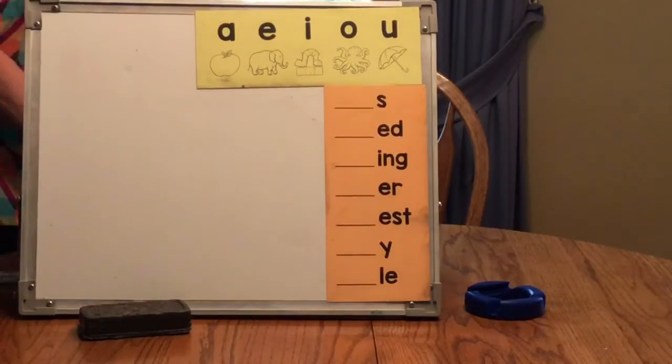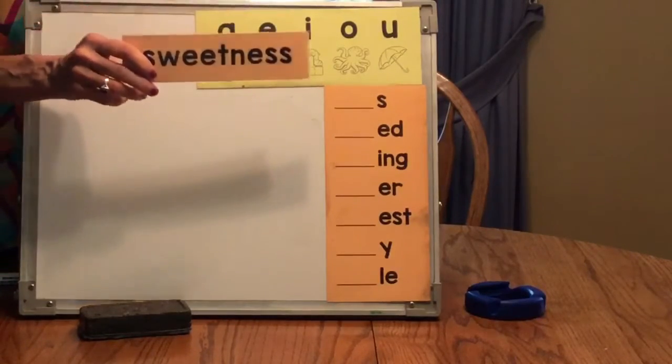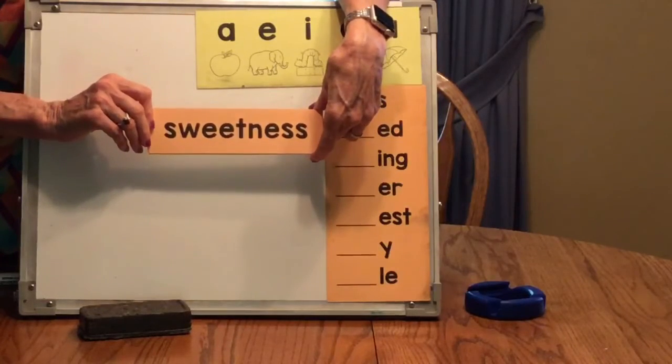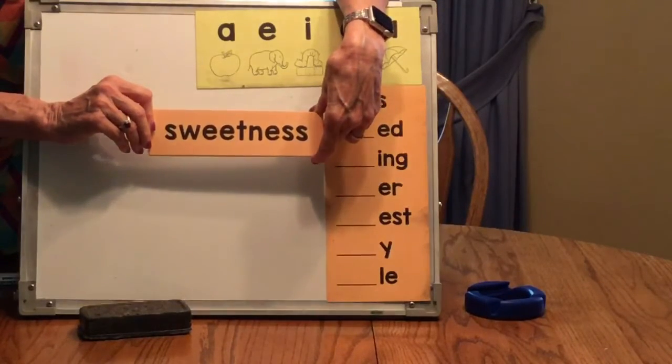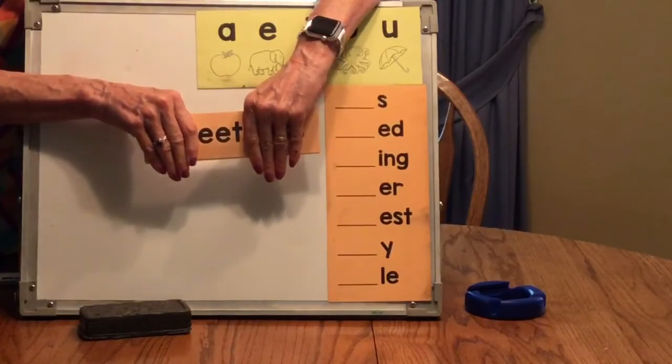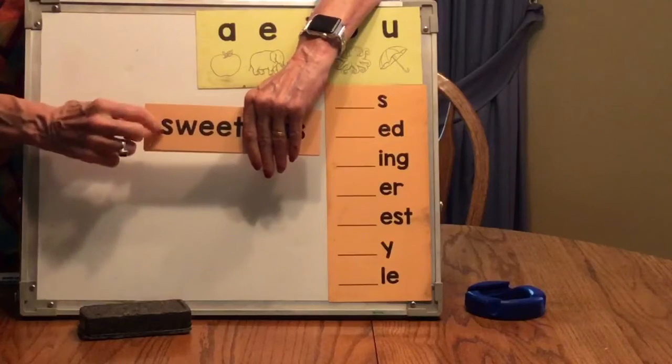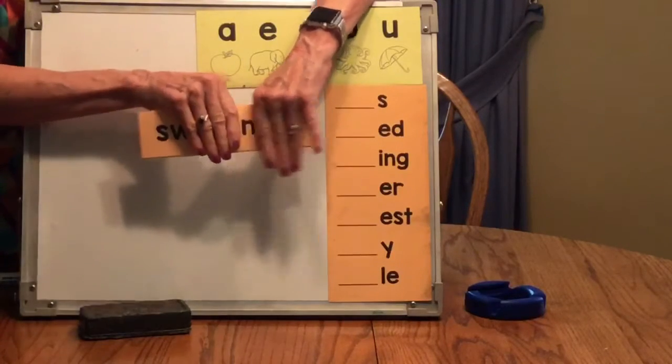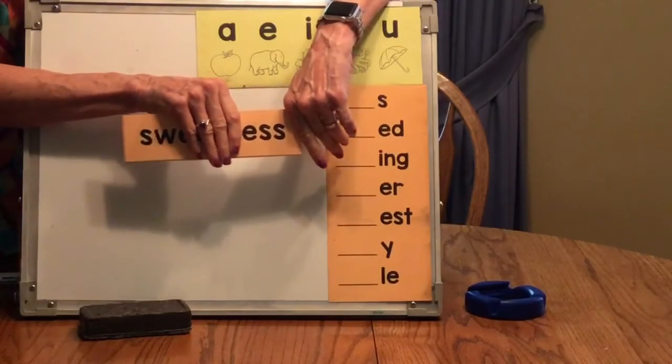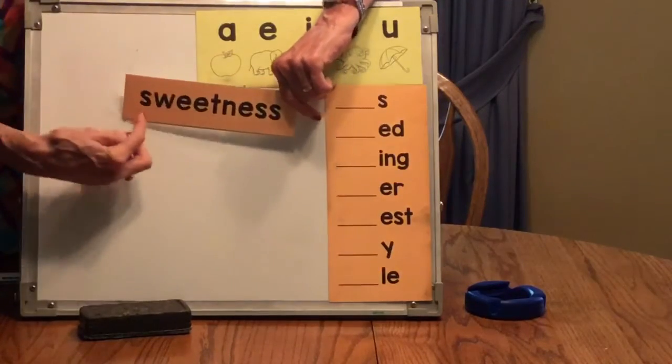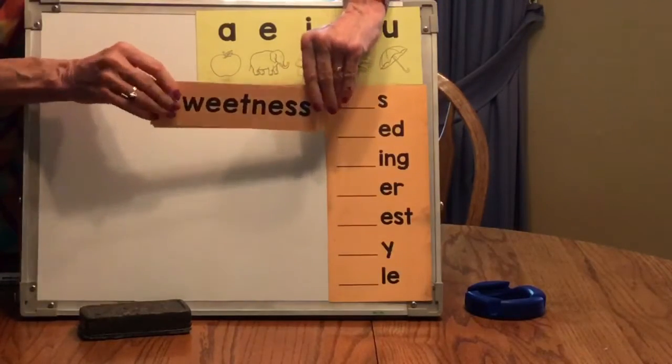All right. Are you ready for a little bit of chunking today? Let's look for your rhymes. I hope you said E-T, E-T, E-T. S-W would say SW-SWEET. And then you had S-S-S-NESS. Put it all together and we have SWEETNESS.